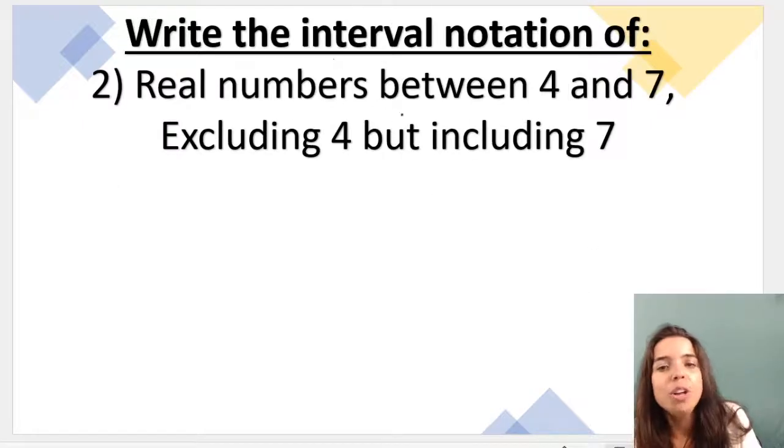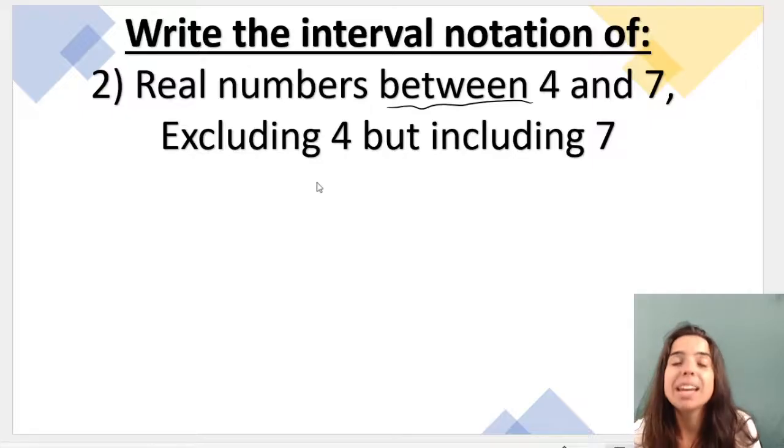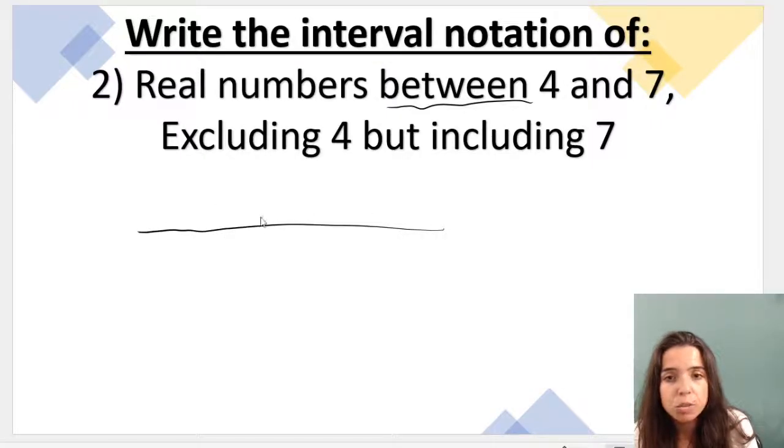One more example. Real numbers between 4 and 7, excluding 4, but including 7. So again, you need to be careful. Think of it in terms of our line like this. So we've got 4 over here. We've got 7 over here. I'm going to indicate that my line goes on that way and that way with arrows. It says between 4 and 7. So we've got 4. We've got 7.